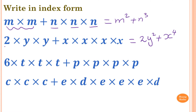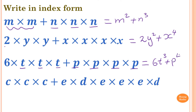First one: write down 6 first, then T times T times T, which is T to the power of 3. For P, we write the plus first, then counting 1, 2, 3, 4 — so P to the power of 4.